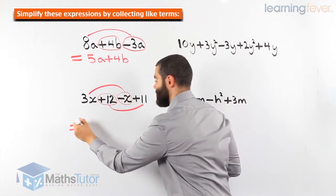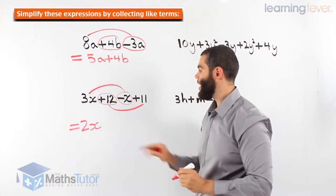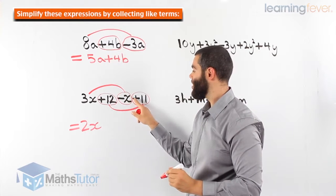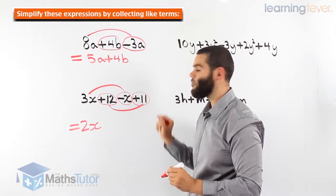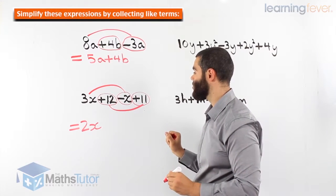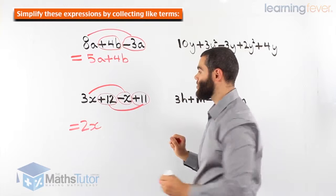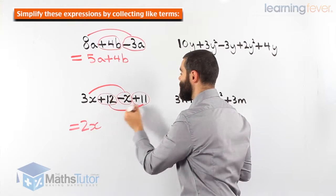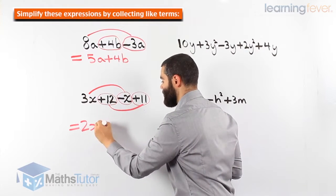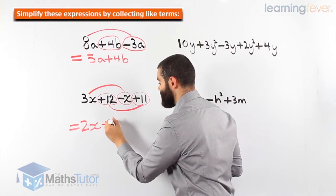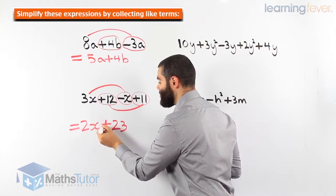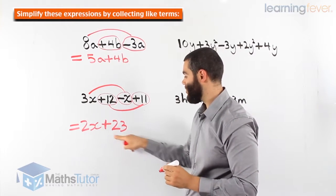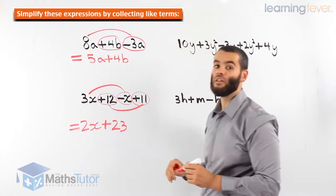3x minus x is 2x. And 12 plus 11 — because the sign always follows the term behind it, which is basically the term on its right. So the plus belongs to the 12, the minus belongs to the x, and the plus here belongs to the 11. So 12 plus 11 is 23. We put a plus because it's positive 23, so the answer is 2x plus 23.